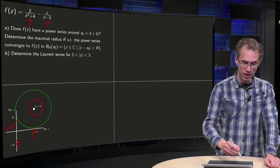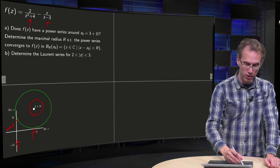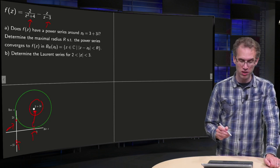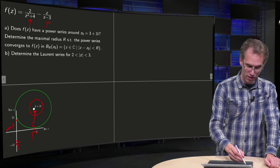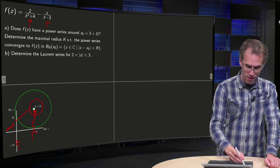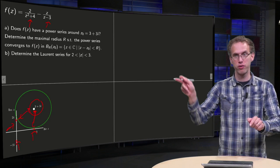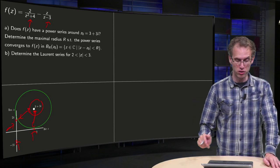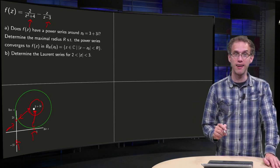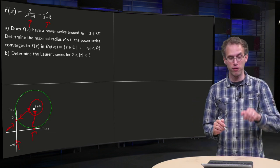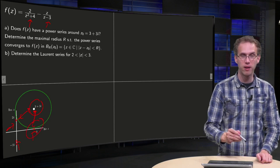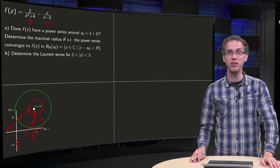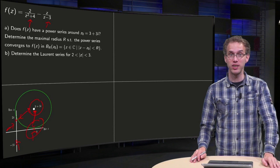This power series converges to f(z) until we hit the first singularity. Going downwards, at distance 3 we hit a singularity. Going left and down to the singularity at 2i — 3 in one direction and 1 in the other — gives a distance of square root of 10. So the first singularity we hit is at 2i, and the maximal radius is square root of 10.